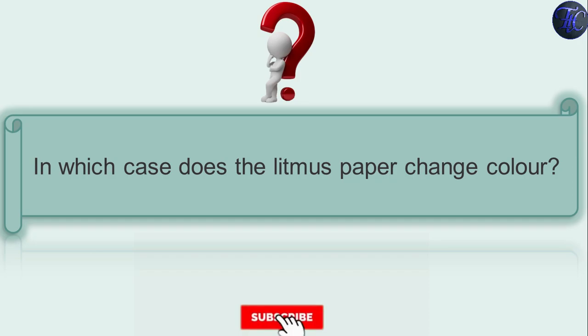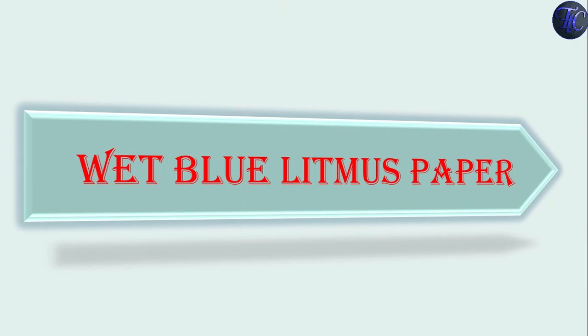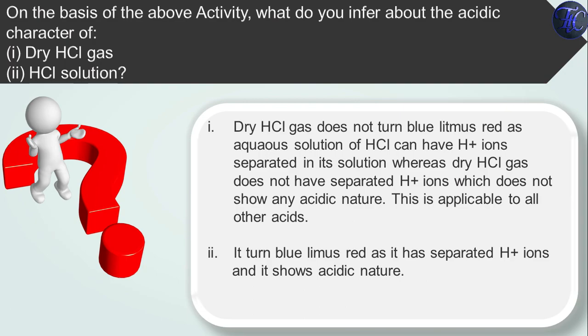The question is in which case does the litmus paper change the color? The answer is wet blue litmus paper. Now on the basis of the above activity what do you infer about acidic character of dry HCl gas and HCl solution? The answer for dry HCl gas is dry HCl gas does not turn blue litmus paper to red as aqueous solution of HCl can have H+ ions separated in its solution.